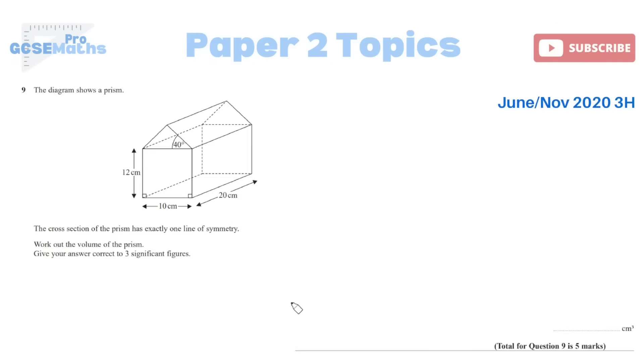Moving on from area, we now have volume of a prism. The diagram shows a prism. The cross section of the prism has exactly one line of symmetry. Work out the volume of the prism. The area of the cross section multiplied by the length. So the cross section in this case is obviously referring to this bit here. So it is a compound shape. I do need to find the area of both. The area of the rectangle is obviously the easiest thing to start with. Length times width. So 12 times 10, which is obviously 120 centimetres squared.